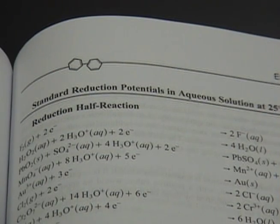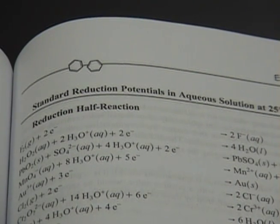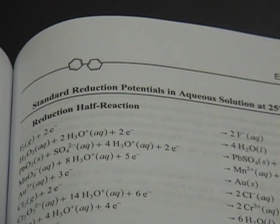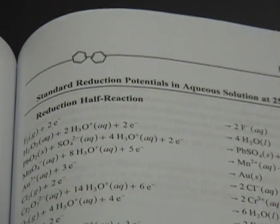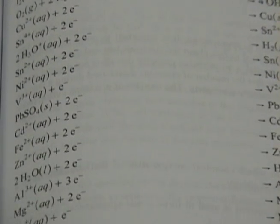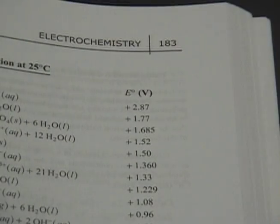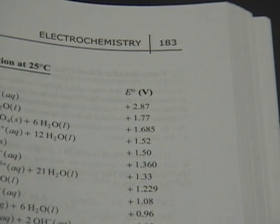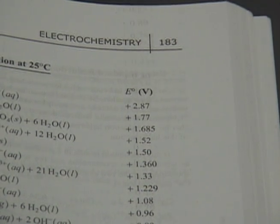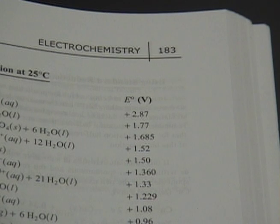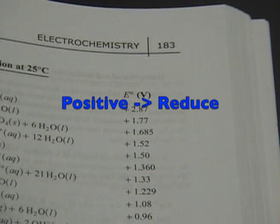Scientists came up with a list of standard cell potential half-reactions for most of the substances involved with redox reactions. Each substance has its standard half-cell potential. Remember: the more positive the cell potential, the more likely it's going to reduce.